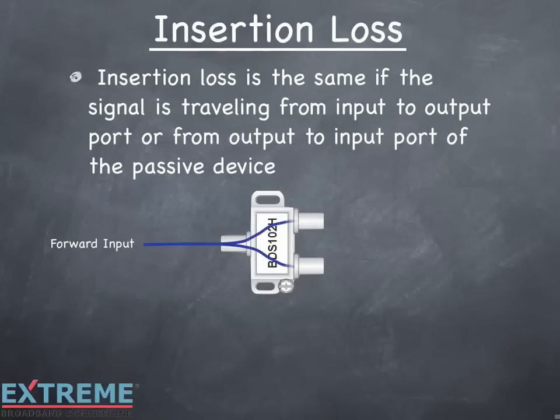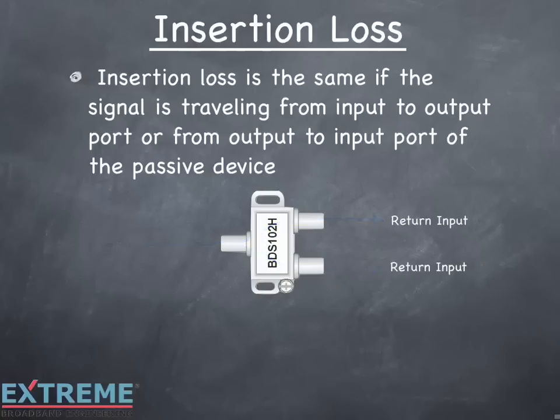Here we're showing a two-way splitter with a forward signal flowing from the input to the output ports, and the return signal feeding from the output ports to the input. In both directions, the insertion loss is the same.